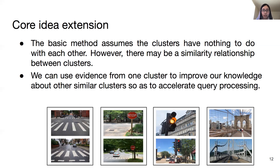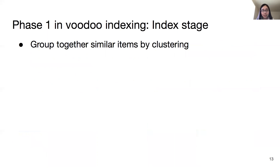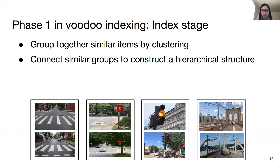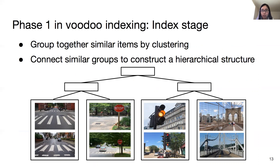For example, sampling from the first group can provide strong evidence that there is a crosswalk to the group itself, and weak evidence to the second group, but almost zero information to the other two groups. To realize this idea, in the indexing stage, in addition to grouping similar items by clustering, similar groups are connected to construct a hierarchical structure. Groups that are more similar, like the first and second group, will be closer in the hierarchy, while groups that are less similar will be further apart.